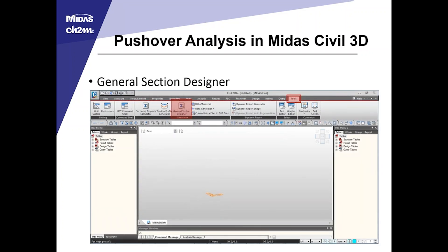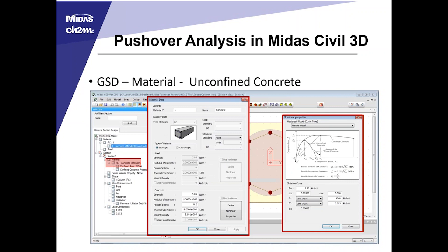To get to the General Section Designer, it's under the Tools main menu. That's in a similar spot to the section property calculator and the tendon profile generator, and will bring up a secondary program. In that program, the first thing to do is define a material — the material window looks very similar to the material window in the main MIDAS Civil 3D. You can choose a concrete standard from various drop-downs and choose a concrete strength, or choose no standard and input the data yourself.